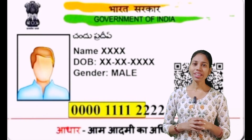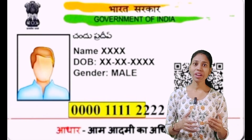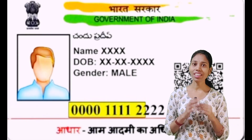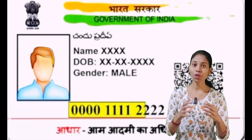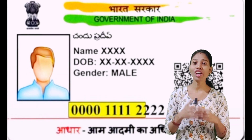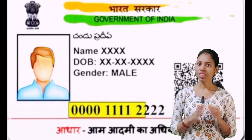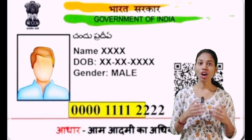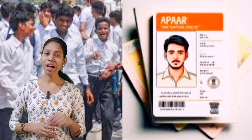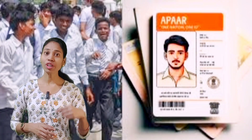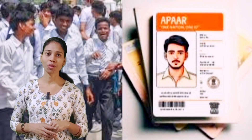Hi friends! If you want to know about another card, it is important to be able to launch it by the government very quickly. The name is Upper card. This card has 12 unique digits.